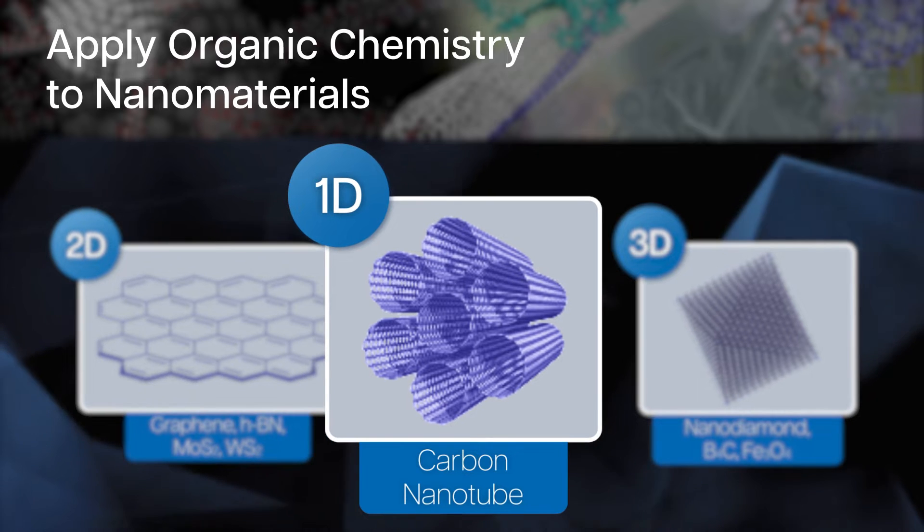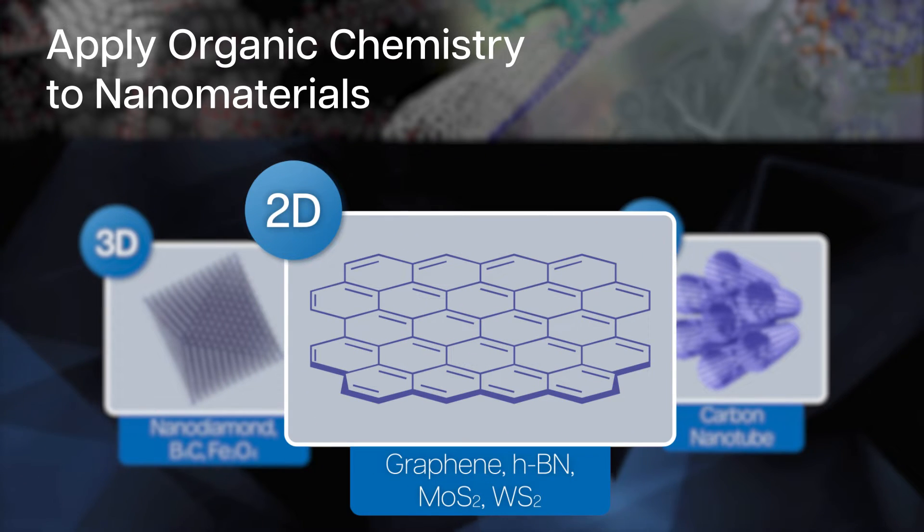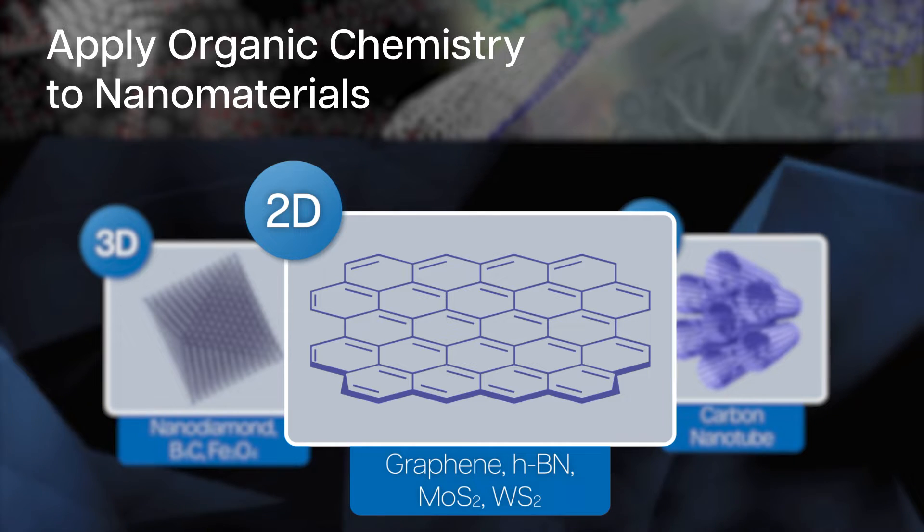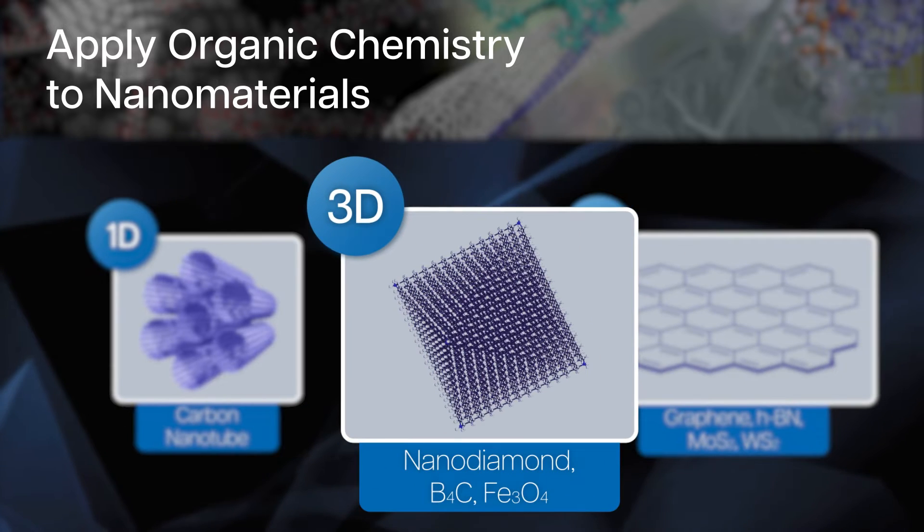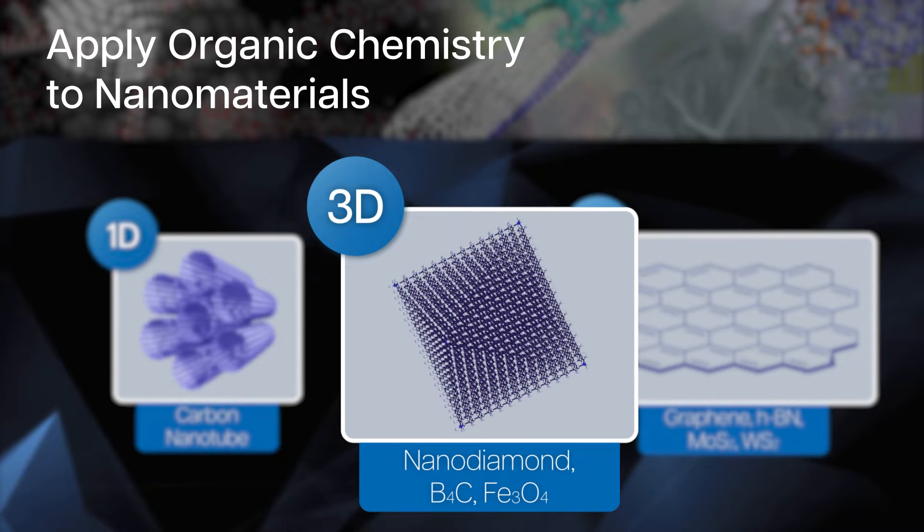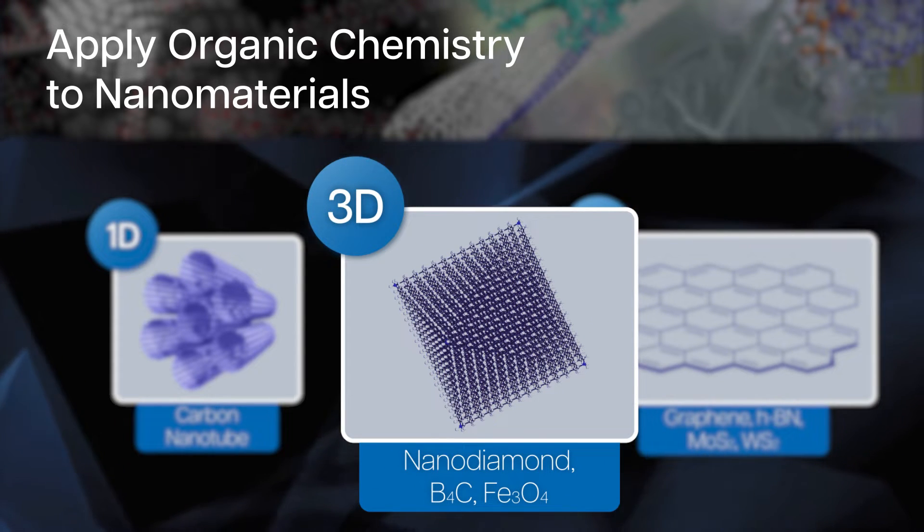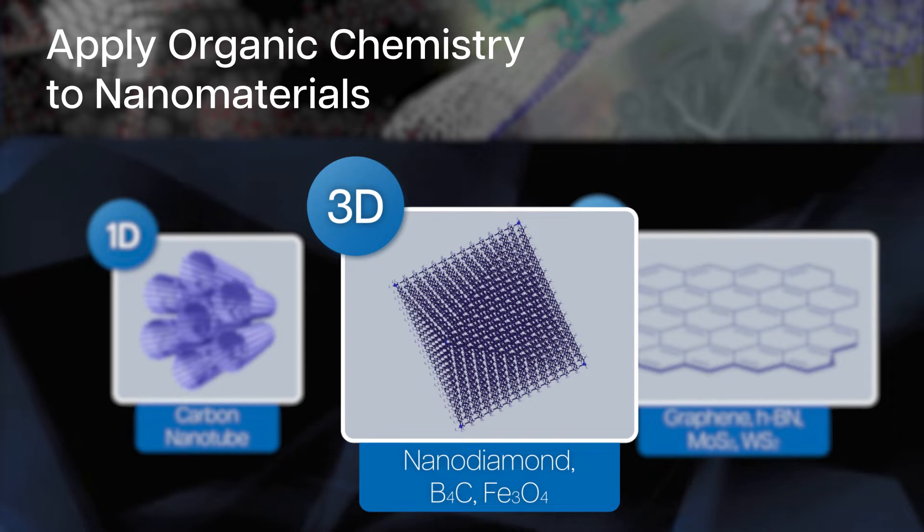such as one-dimensional nanotubes, two-dimensional nanosheets such as graphene, hexagonal boron nitride, molybdenum and tungsten disulfides, and three-dimensional nanoparticles like nanodiamond, boron carbide, and iron oxide.